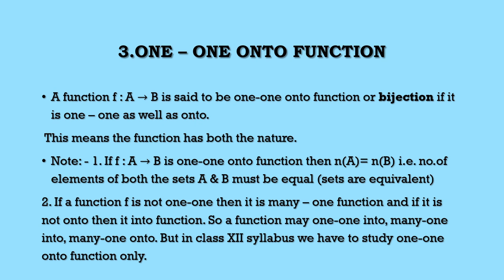The third type is the one-one onto function, or bijection. A function F from A to B is said to be a one-one onto function if it is both one-one and onto. An important note: if F is a one-one onto function from A to B, this is possible only when n(A) = n(B), that is, the number of elements of A equals the number of elements of B — meaning the sets are equivalent. One-one means each element of A maps to one element of B, and no element of B is left out, so both sets must have the same number of elements.